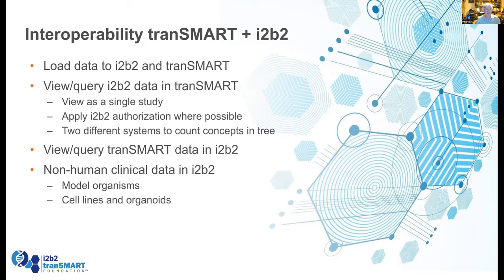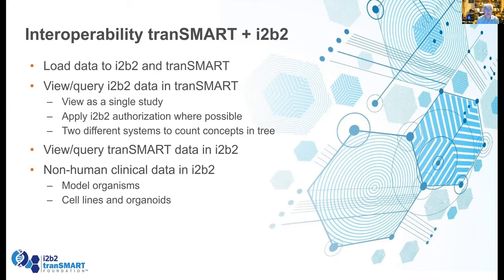If we've got data loaded up in both, we can look at the I2B2 data in TransMart. TransMart likes to view things as studies — every study has a top node in a tree and all the study data is below it. So it would typically look at the I2B2 data as a single study, assuming it's all in one top node. We need to figure out how to apply authorization to get the data — can TransMart actually see various bits of data? Another issue is that the data has counts for the number of concepts, but I2B2 and TransMart use different methods. We need to find a way to resolve how those are going to work — maybe use one system, or keep them both up to date.